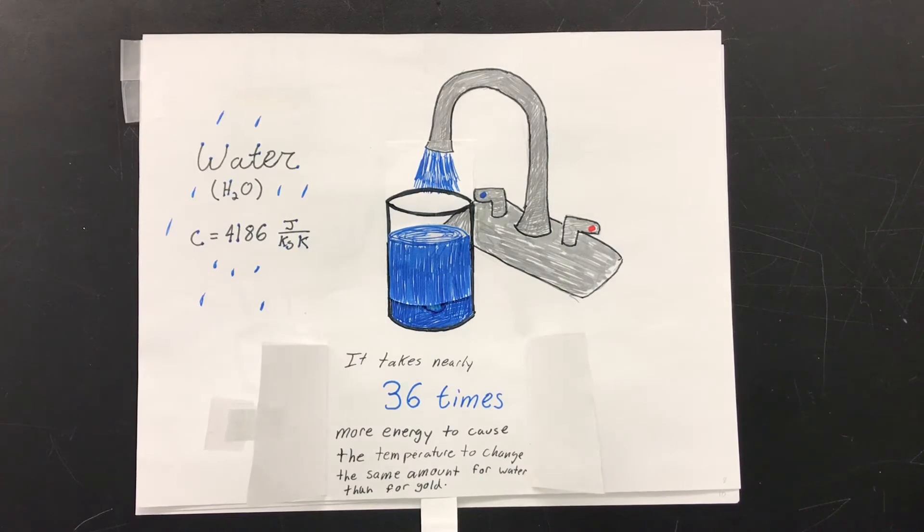And similarly, you must remove 4,186 joules to lower a kilogram of water by 1 degree Kelvin. No wonder it takes so much longer to heat up a kilogram of water as opposed to a kilogram of a metal called gold.